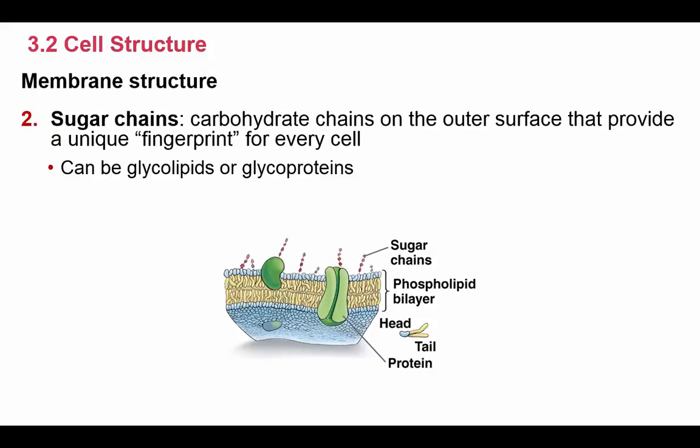The second structure of the membrane is sugar chains. Sugars are basically carbohydrates, and these sugar chains provide a unique fingerprint for every cell in your body. They can be made of glycolipids and glycoproteins. This unique fingerprint allows your body to recognize cells as self-cells or foreign cells. Self-cells belong to you and should stay in your body, while foreign cells like bacterial cells don't carry your fingerprint and your body would recognize and hopefully eliminate them.